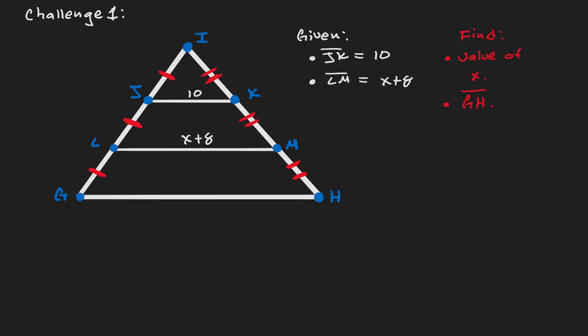Let's start by thinking about how we can find the value of x. One strategy that we can do is that we can notice that we have a triangle. Now if we concentrate on that triangle, notice that JK is the median of that triangle.